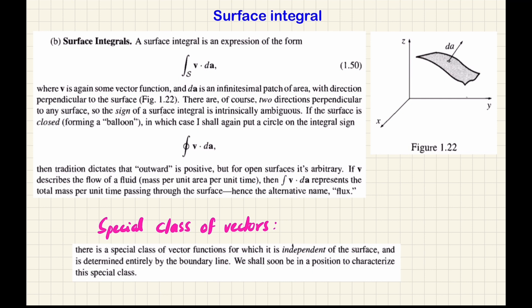Suppose the surface is like a football — it is a closed surface. In the case of a closed surface, we have a closed surface integral. There are certain vector functions which do not depend on the surface but only depend on the boundaries of the surface. In that case, we have a special class of vectors, which we will classify in coming classes.